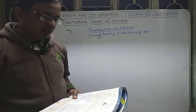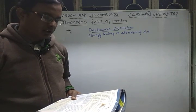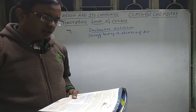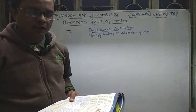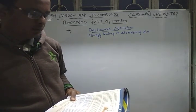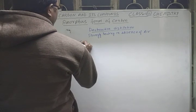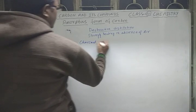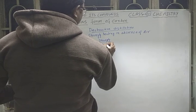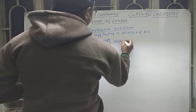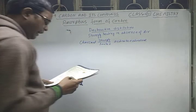Similarly, destructive distillation can be done on sugar and bones. Bones yield bone charcoal. When charcoal is strongly heated further, it forms activated charcoal. Activated charcoal is more porous than ordinary charcoal.